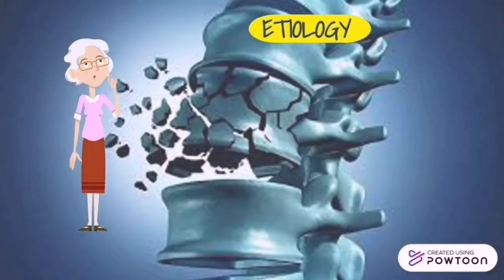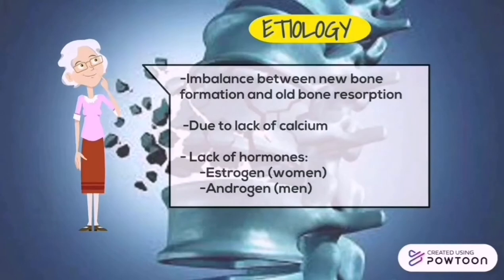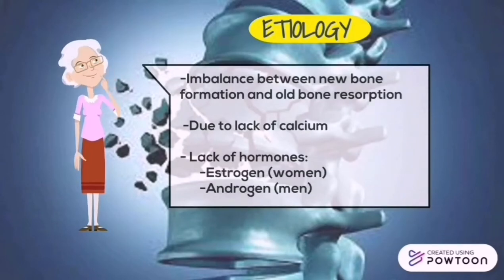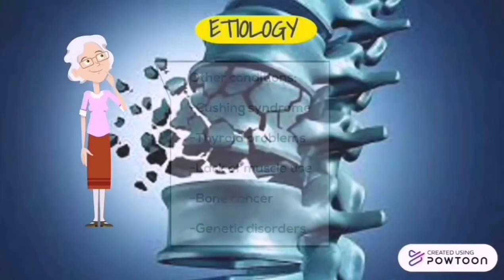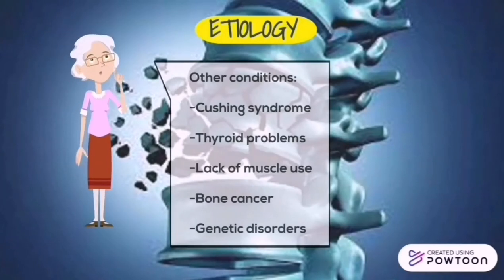Etiology: osteoporosis is caused by an imbalance between new bone formation and old bone resorption, due to lack of calcium and lack of hormones such as estrogen in women and androgen in men. Other conditions that cause osteoporosis include Cushing syndrome, thyroid problems, lack of muscle use, bone cancer, and genetic disorders.